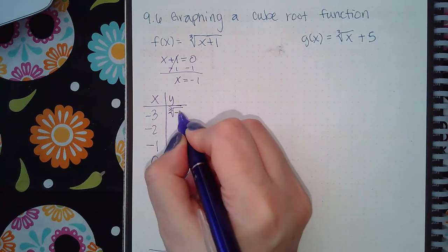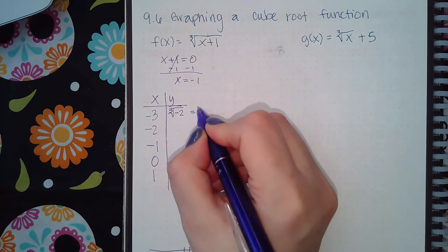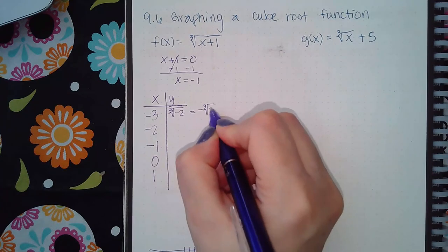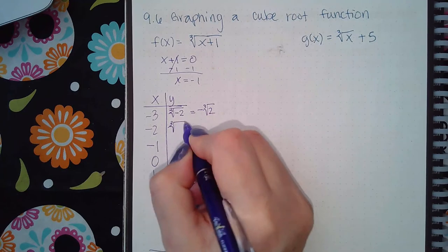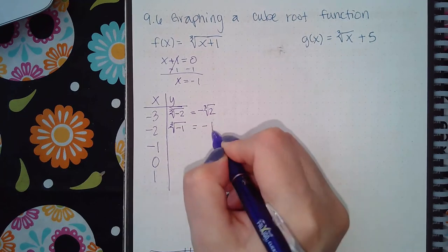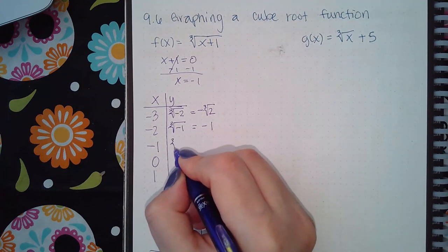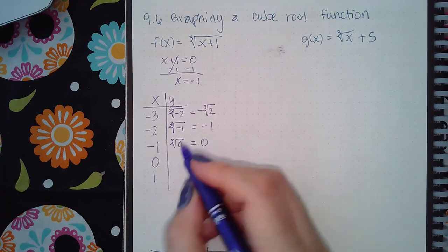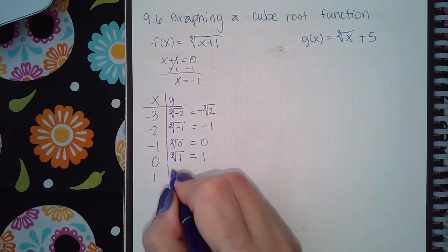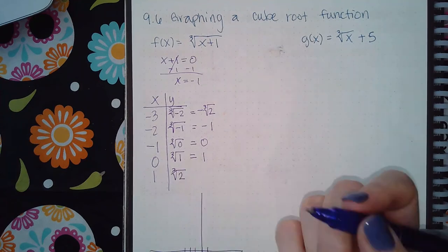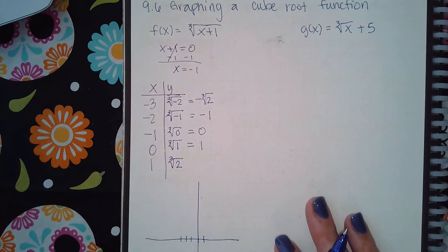I end up with negative cube root of 2, which does not simplify. Here I get cube root of negative 1, which is just negative 1. Here I get the cube root of 0, which is 0. Cube root of positive 1, which is positive 1, and then the cube root of 2, which stays a positive cube root of 2.